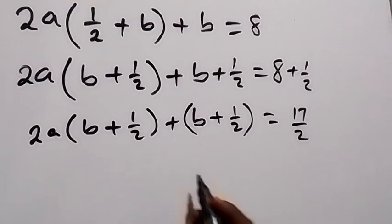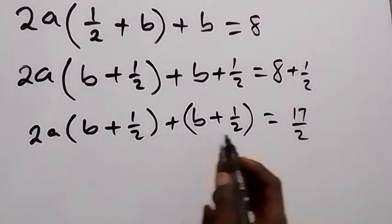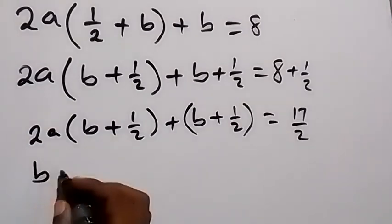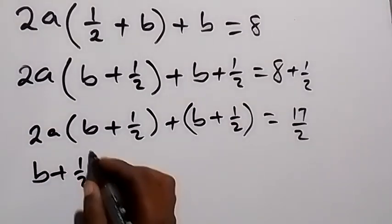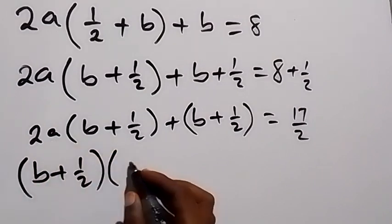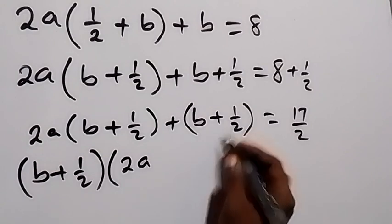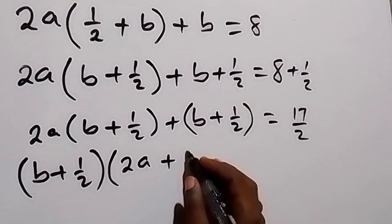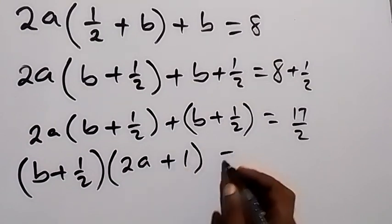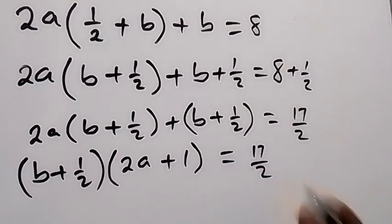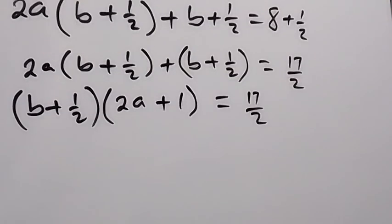From here, we can factor out (b plus half), because we have (b plus half) here and (b plus half) here. So we take it out and we have (b plus half) into bracket: what is left here is 2a, and what is left here is just 1. So we have (b plus half) times (2a + 1) equals 17 over 2.